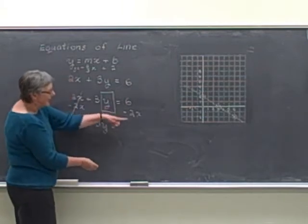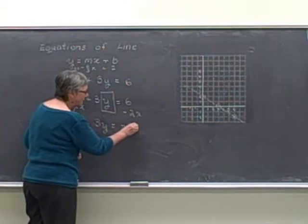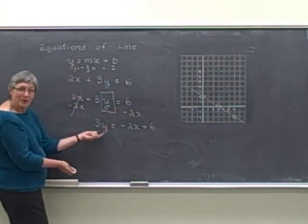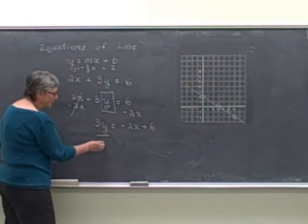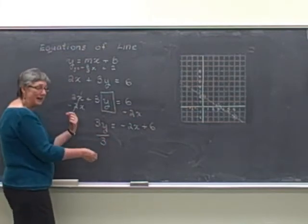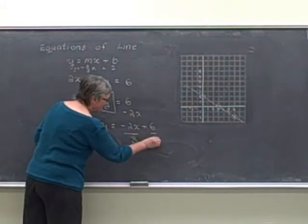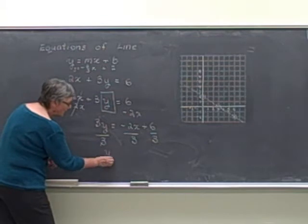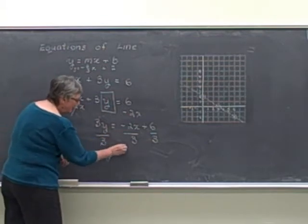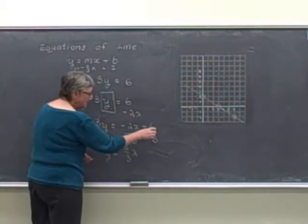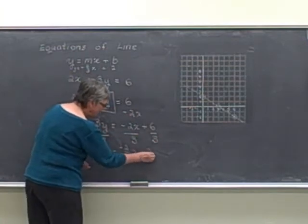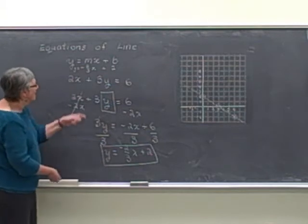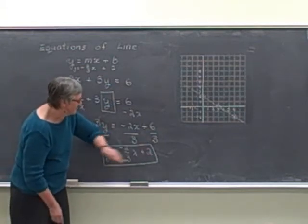On the right, these are not like terms, so I'm just going to write it out as negative 2x plus 6. And then the last step in solving for y would just be divide by 3. We have to remember to divide every term by 3. And the 3s cancel here. This would be the equation y is equal to negative 2 thirds x. And here 6 over 3 is the same as 2. And so I get that equation again in slope-intercept form of y is equal to negative 2 thirds x plus 2.